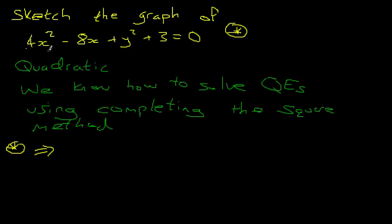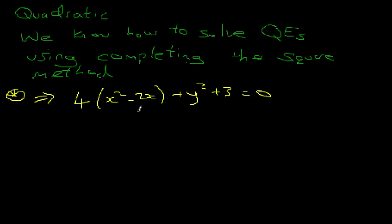So if we call this equation star, then, alright, star implies, so we can factor a 4 out, and then we have x squared minus 2x. So, 4, x squared minus 2x, plus y squared plus 3 is 0.